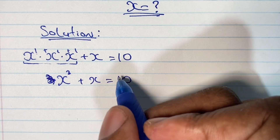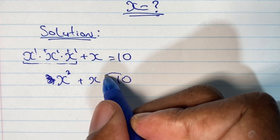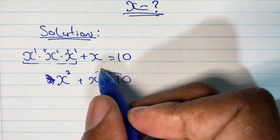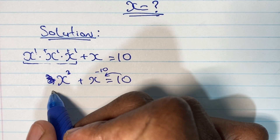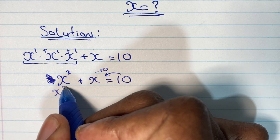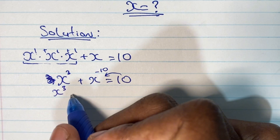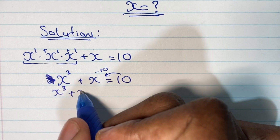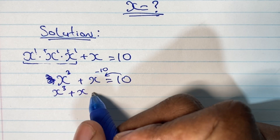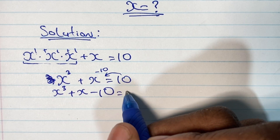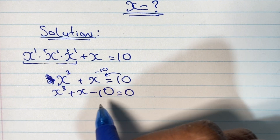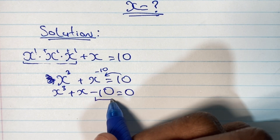We can bring the 10 over to the left hand side by subtracting it from both sides, so that gives us x to the power of 3 plus x minus 10 is equal to 0.